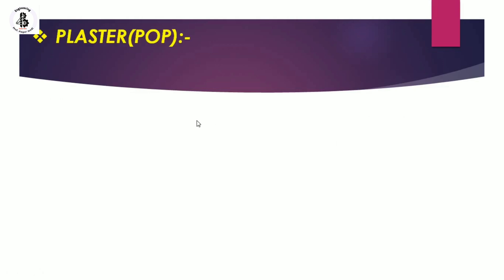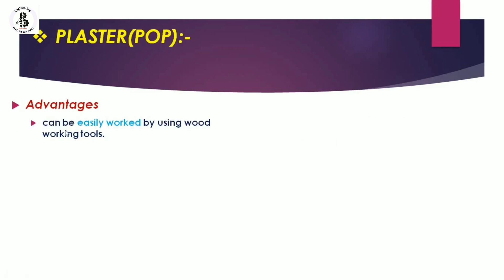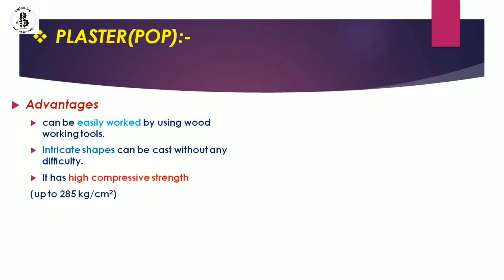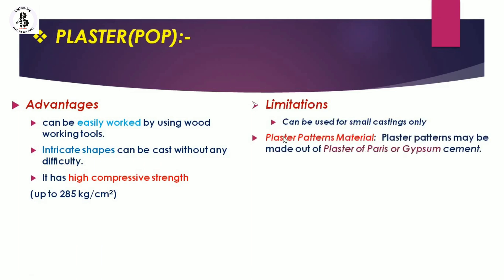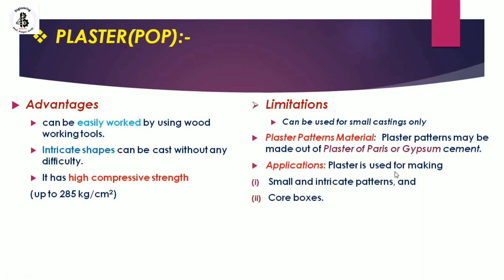The next material is plaster, also known as POP or plaster of paris. Advantages: it can be easily worked using woodworking tools; intricate shapes can be cast without difficulty; it has a high compressive strength of around 285 kg/cm². Limitations: it can be used for small castings only. Plaster patterns may be made from plaster of paris or gypsum cements. Applications: plaster is used for making small and intricate shapes and also for making core boxes.